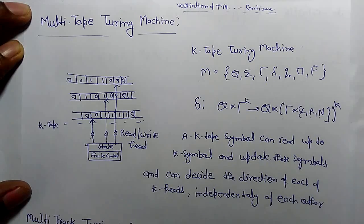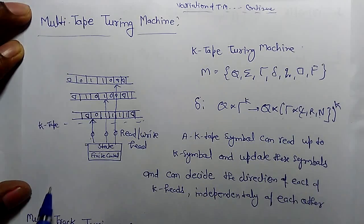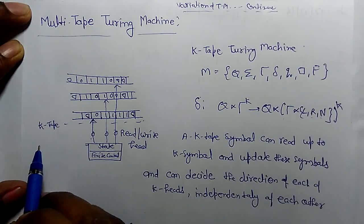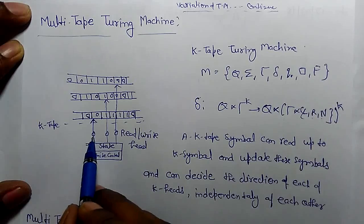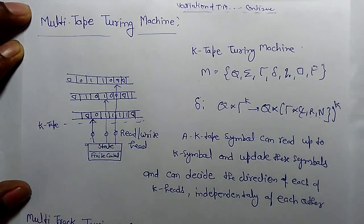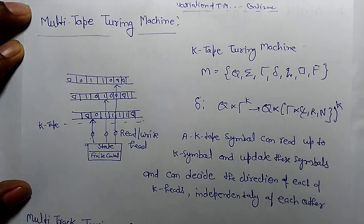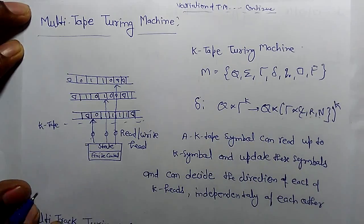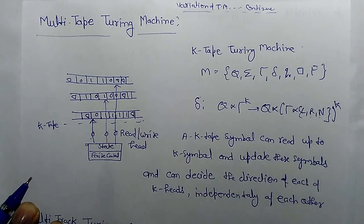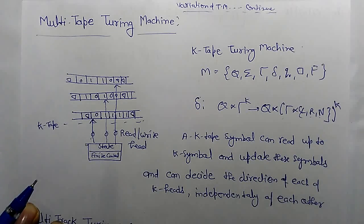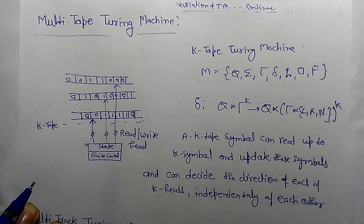A multi-tape Turing machine is similar to the single-tape Turing machine discussed so far, but with k number of independent tapes each having their own read and write heads. These machines have independent control over all the heads, and any of these can move, read, and write on their own tapes. The multi-tape Turing machine model initially seems to be much more powerful than the single-tape model.